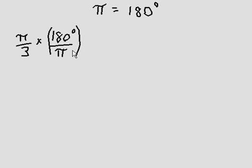Because these are equivalent. That's in degrees, that's in radians, but the units cancel out because pi divided by pi is 1.